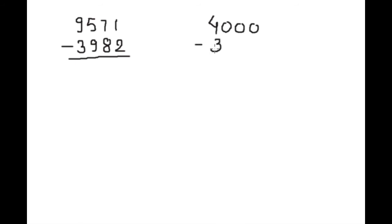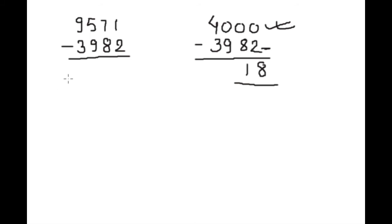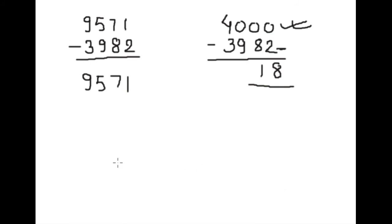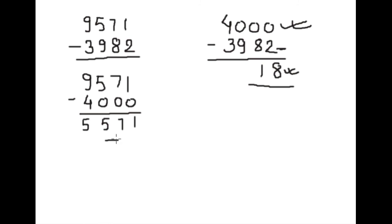If we subtract from four thousand, we find that four thousand is eighteen extra than the actual number three thousand nine hundred eighty-two. So first we subtract from the nearest whole number: nine thousand five hundred seventy-one minus four thousand. We get one thousand five hundred seventy-one. Since we subtracted eighteen extra, we now add eighteen.